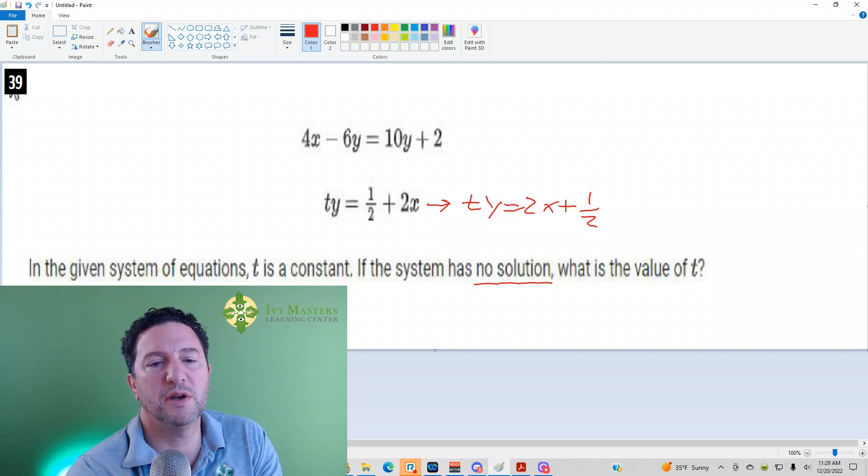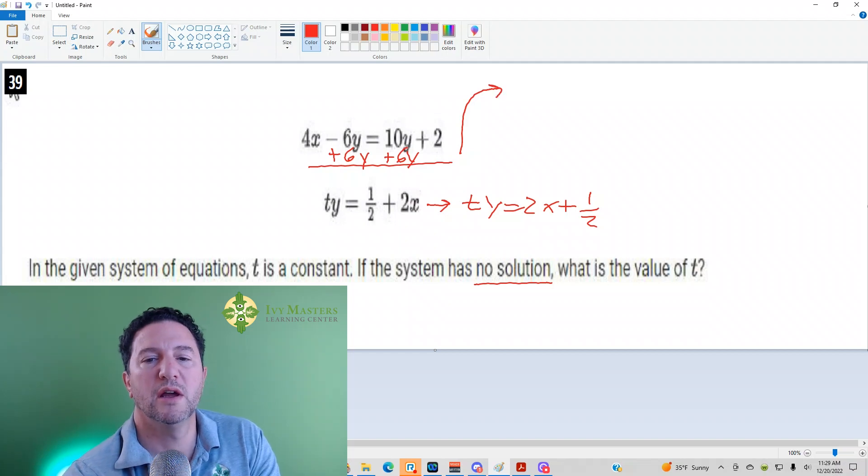So probably the easiest way to get y alone is to add 6y—we're going to get 16y. We're keeping it positive, I'm going to write the result over here. At that point, you'd have 4x, these would cancel, and you'd have equals 16y plus 2.